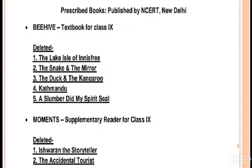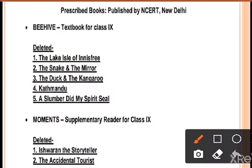Now let's see what is deleted in literature. The deleted chapters are: The Lake Isles of Innisfree, The Snake and the Mirror, The Duck and the Kangaroo, Kathmandu, A Slumber Did My Spirit Seal from the main book. From Moments supplementary book, 2 chapters are deleted: Ishwaran The Storyteller and The Accidental Tourist. Total 5 plus 2 equals 7 chapters deleted from literature.